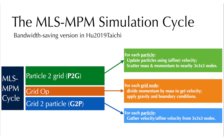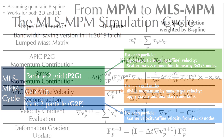During grid-to-particle transfer, we gather velocity from the grid. We gather velocity gradient if necessary and the APIC velocity field. We update the deformation gradient and advect the particles.